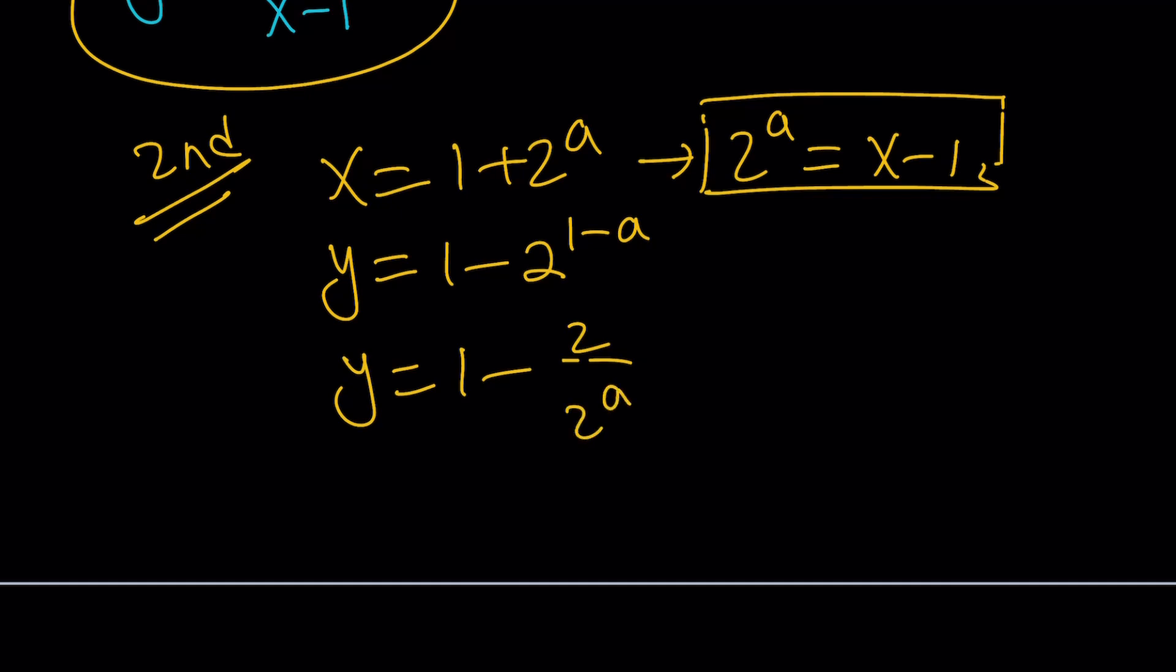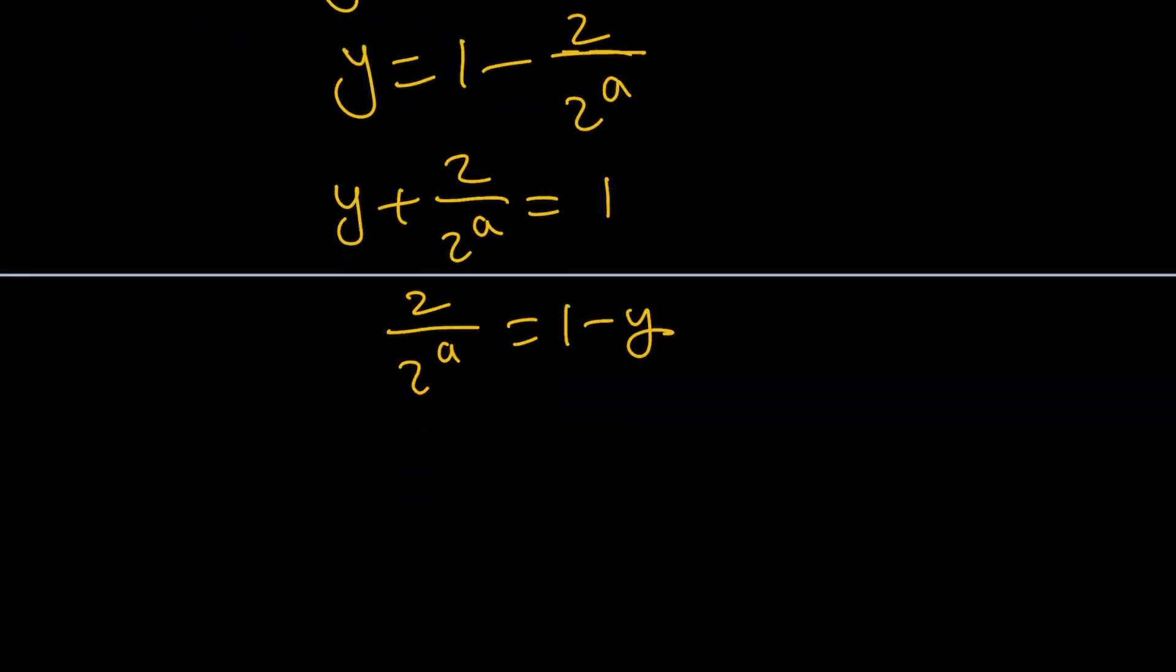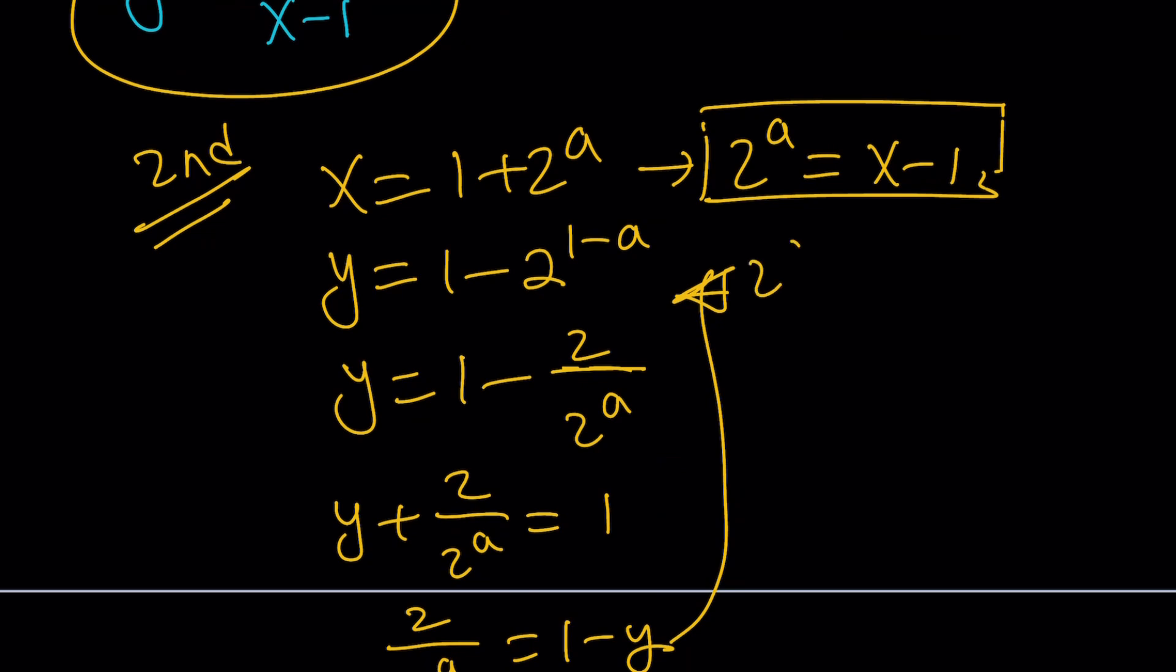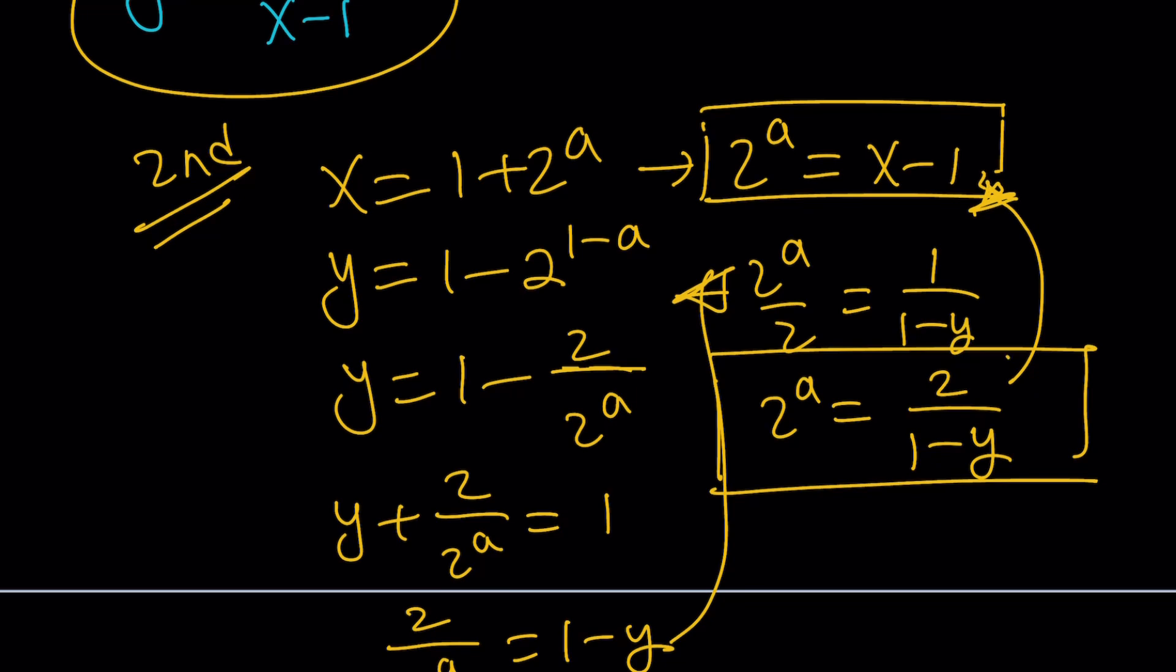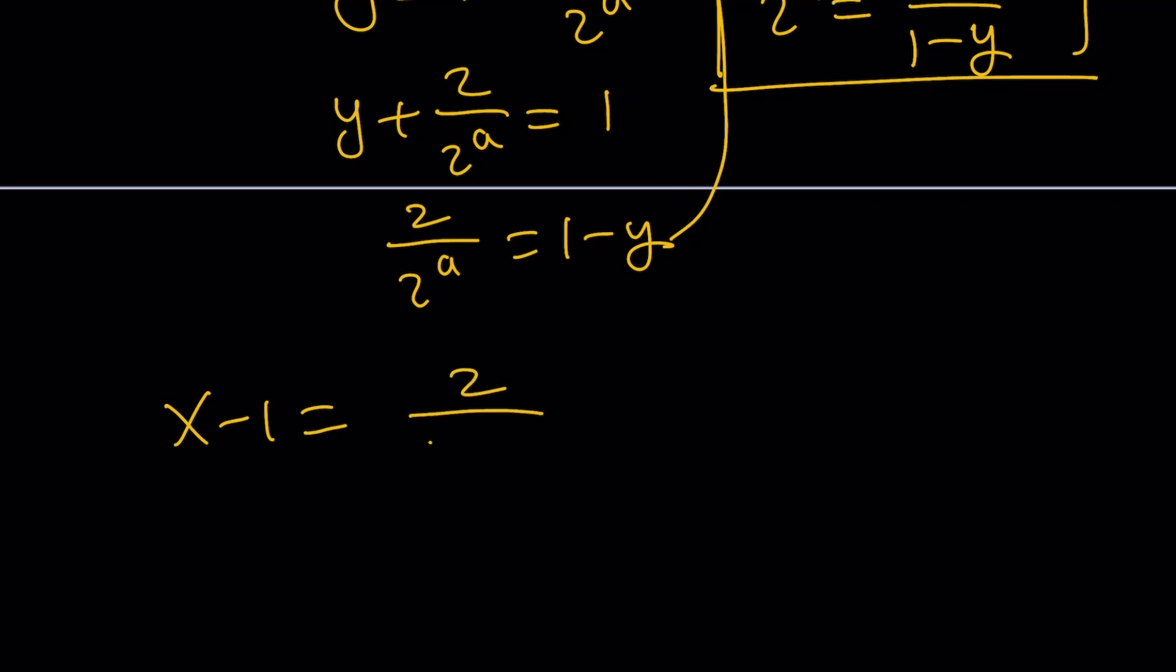Let's try to solve for 2 to the a. So I can do the following. I can basically add this to both sides. So it's going to give me y plus 2 over 2 to the a equals 1. And then I can subtract y from both sides. That's going to give me 1 minus y. At this point, it would make sense if we flip both sides. In other words, the reciprocals. That's going to give me 2 to the a over 2 equals 1 over 1 minus y. And then I'm going to multiply both sides by 2. And that's going to give me the value of 2 to the power of a. And now, guess what? These two things are equal. Because if two things are equal to the same thing, then they're equal.